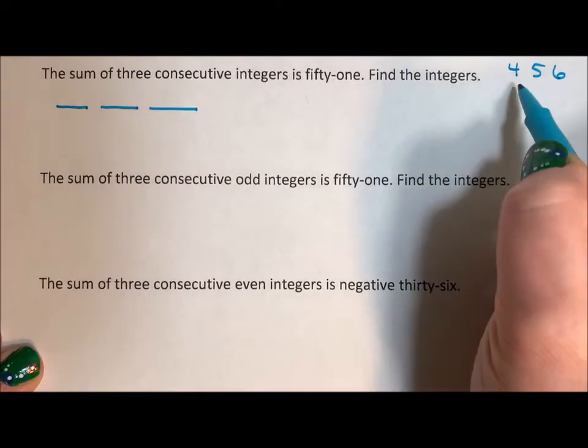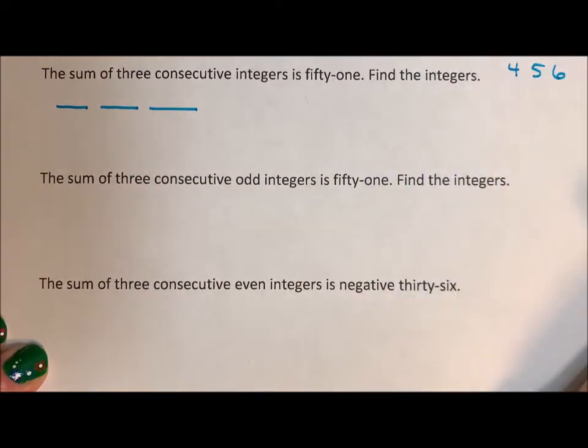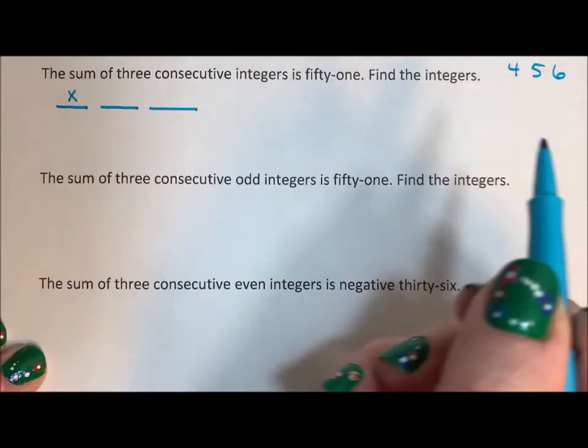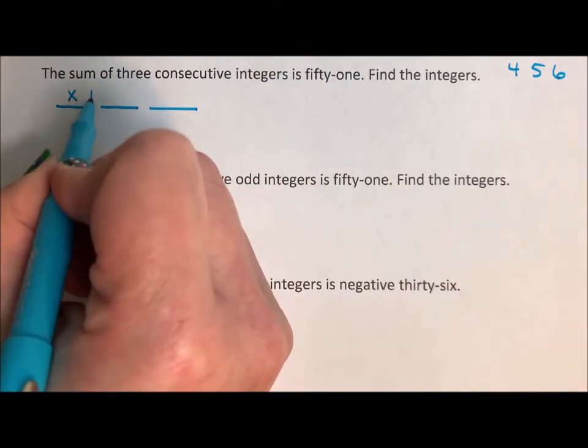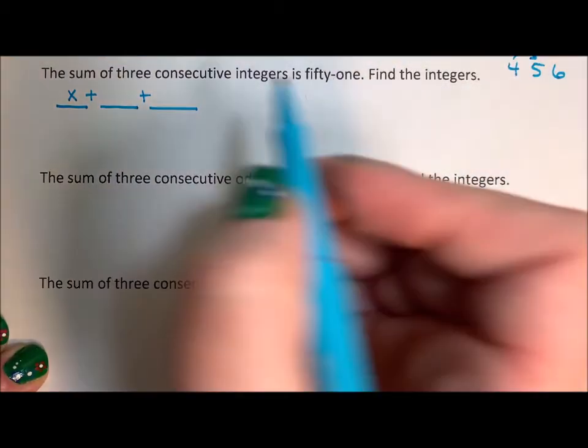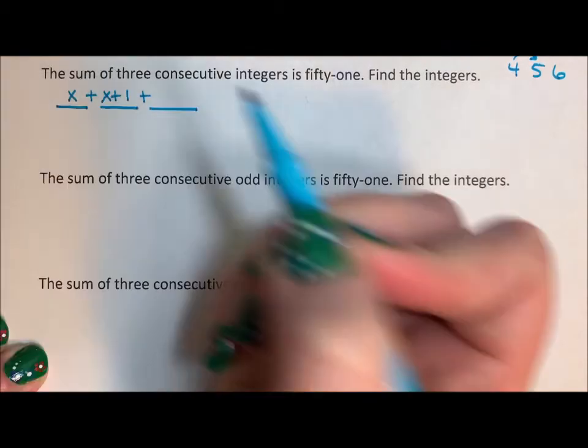And notice that consecutive integers are just numbers right in a row. So if I make my first number x, that would be my four. Five is just one greater than four, so x plus one. That would be my five.